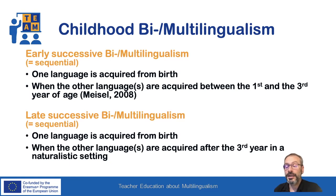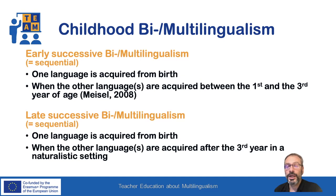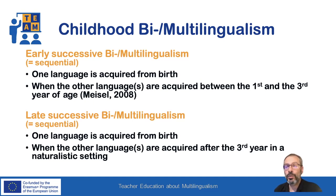The final distinction is between early and late successive multilingualism. We talk about early successive multilingualism when one language is acquired from birth and the other language or languages are acquired between the age of one and three years. In the case of late successive multilingualism, one language is acquired from birth and the other is acquired after the age of three in a naturalistic setting.